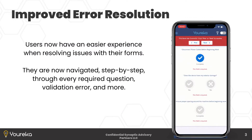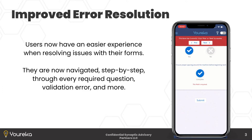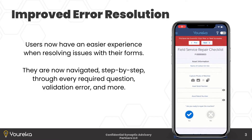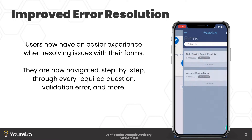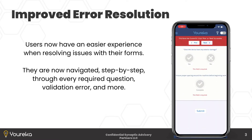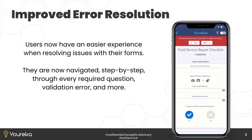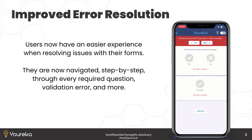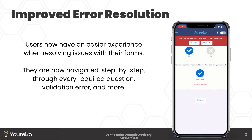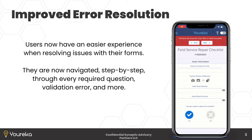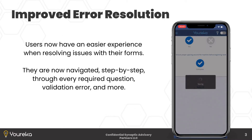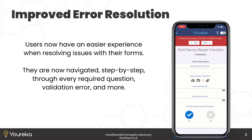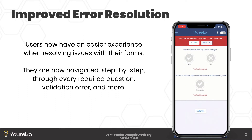The first feature we're excited to show is what we're calling improved error resolution. When users are filling out a form inside the Eureka application, you can make fields required and enable data validation where certain values need to be typed into a field. If those values aren't honored when the user tries to submit, they'll hit an error. Before this release, Eureka did enforce these errors, but it wasn't intuitive for users.